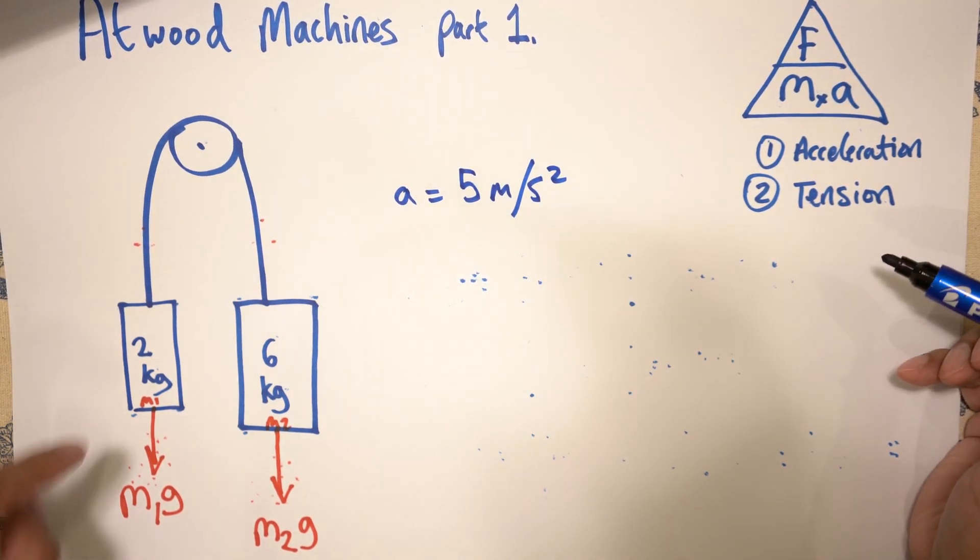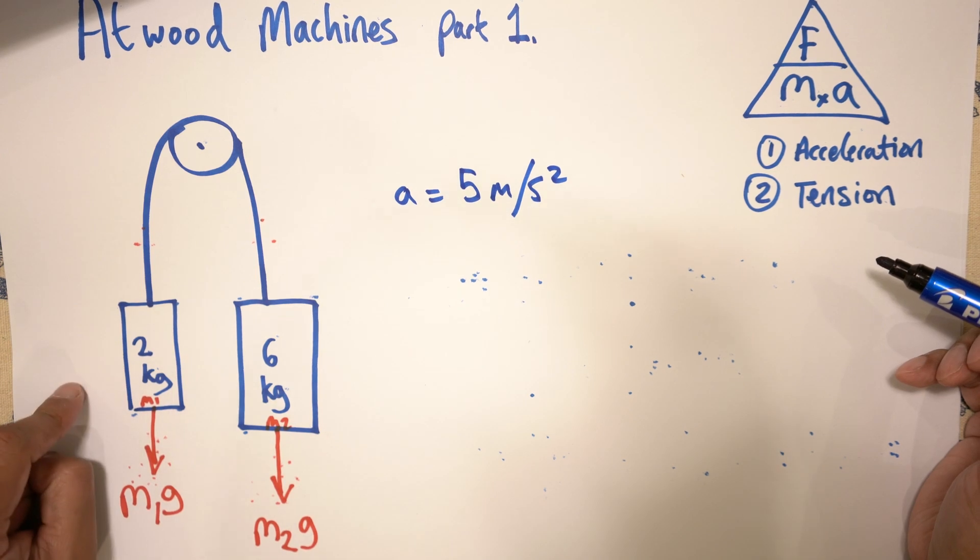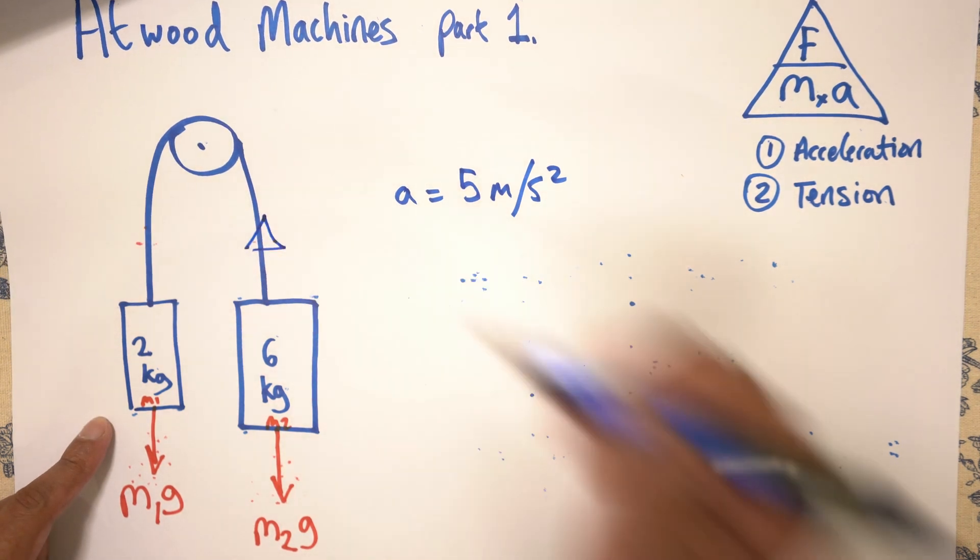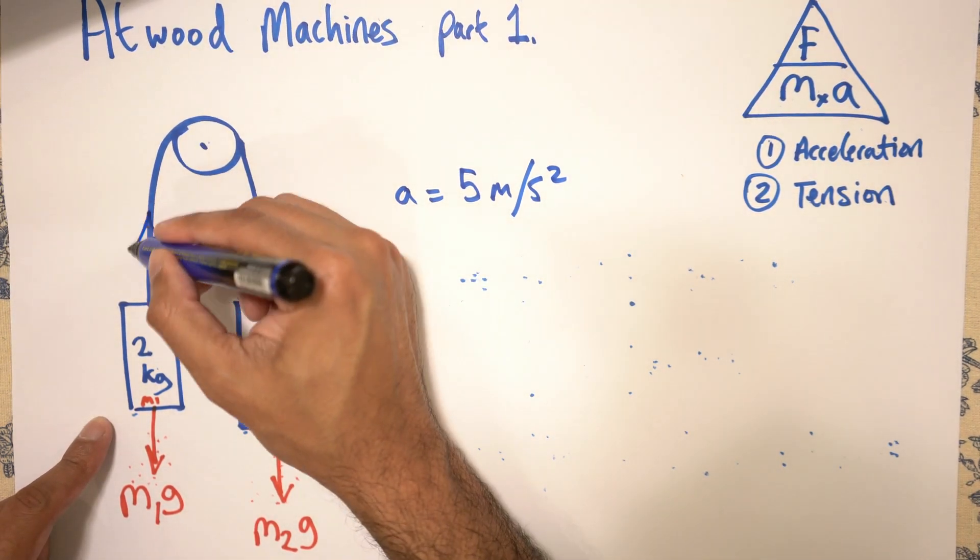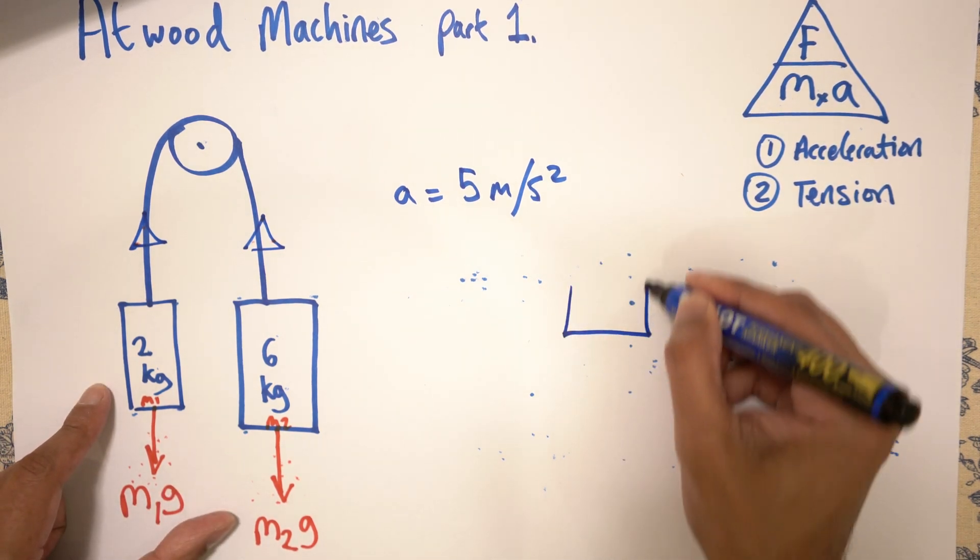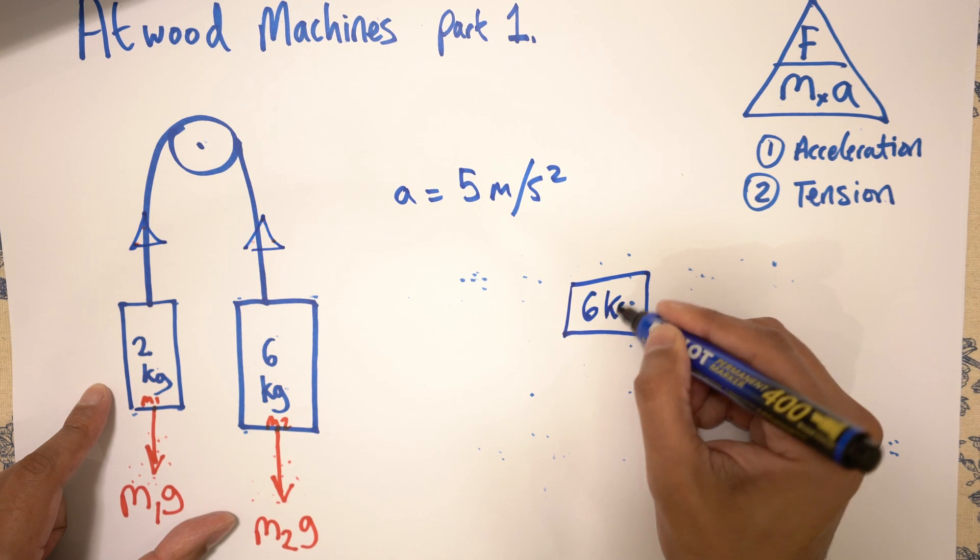Now to work out the tension in the string, we just need to take one of these masses. And we've got to figure out basically the tension which goes in that direction or that direction. I usually take the bigger one. So let's figure this out.